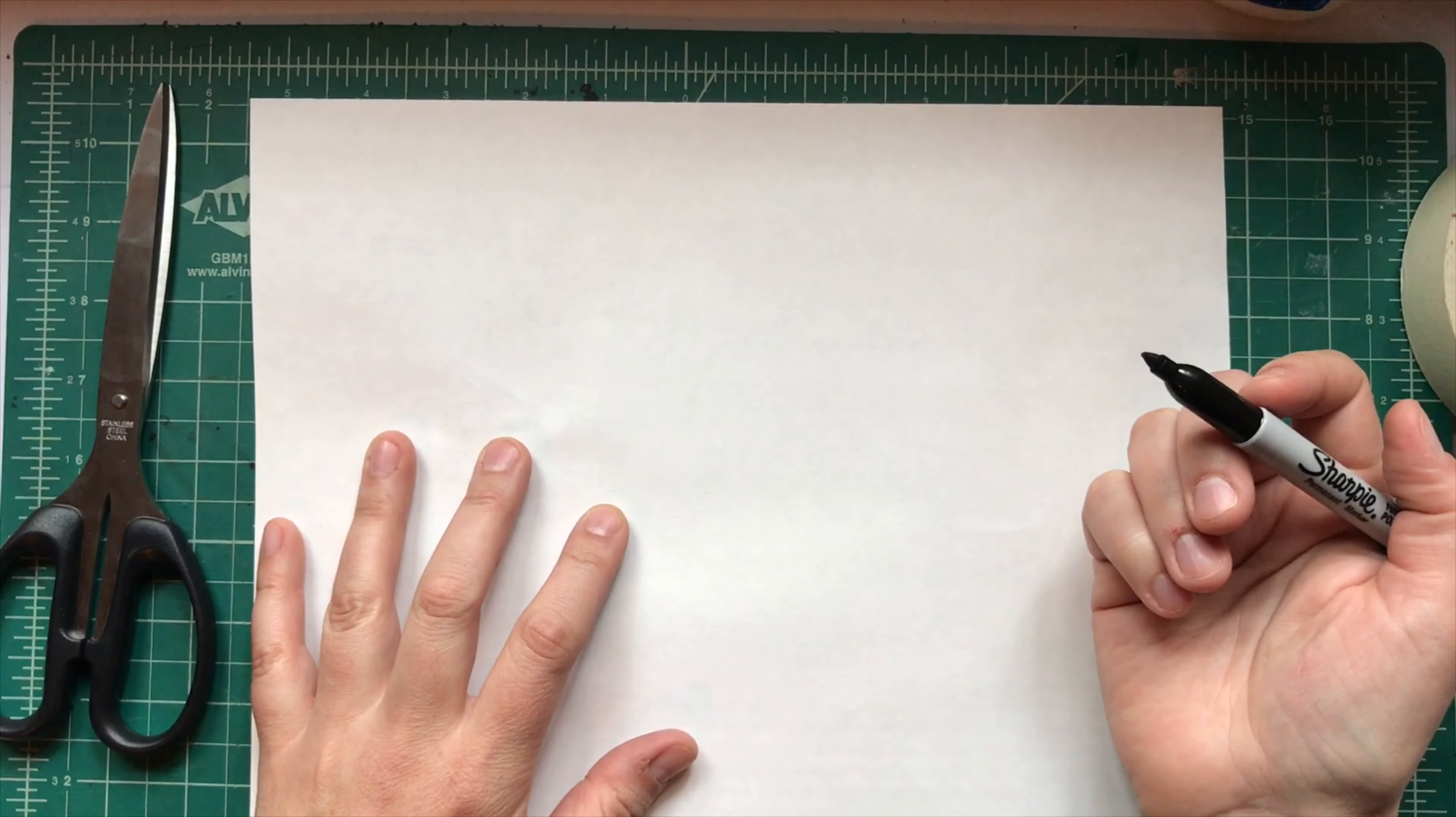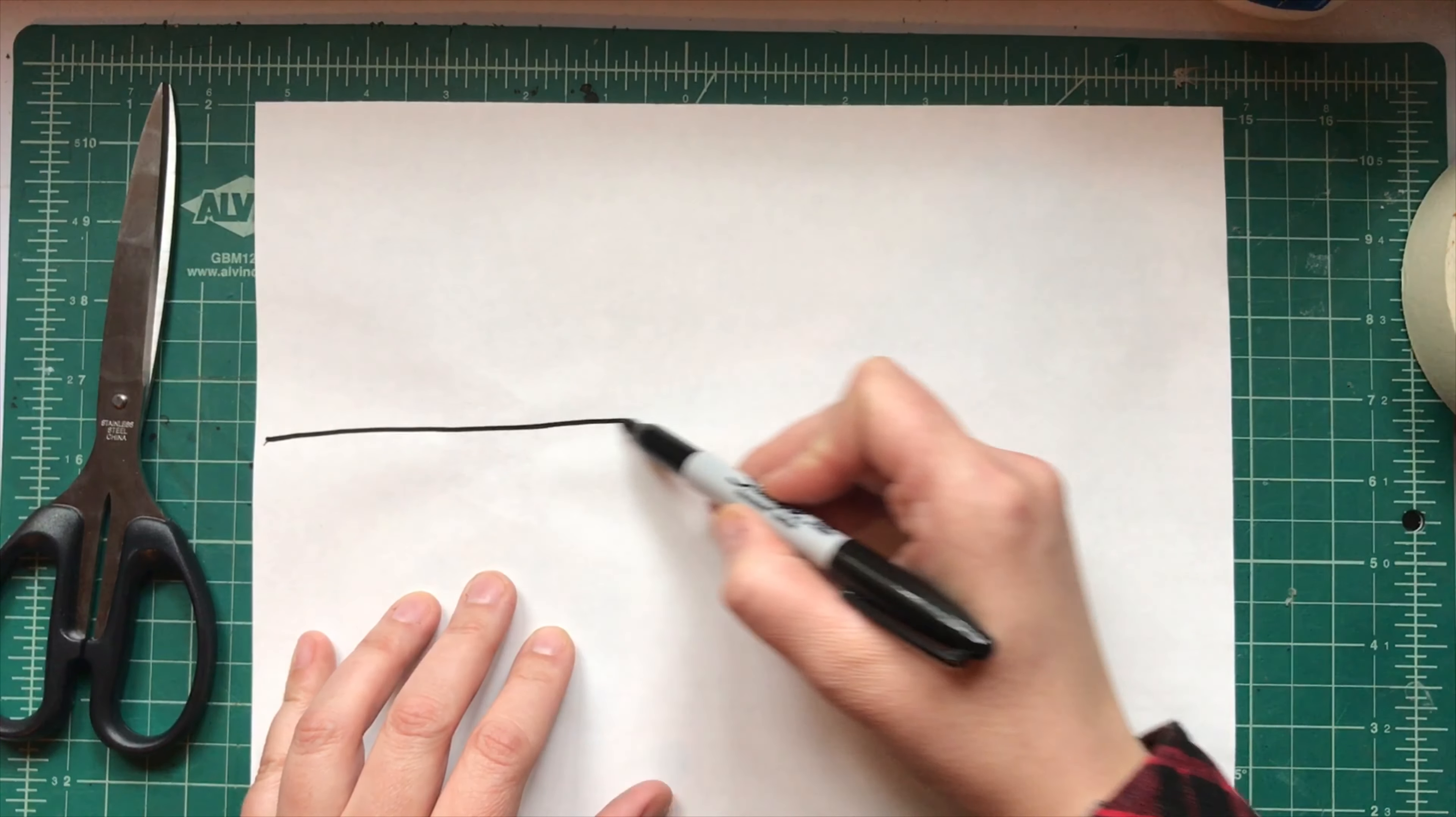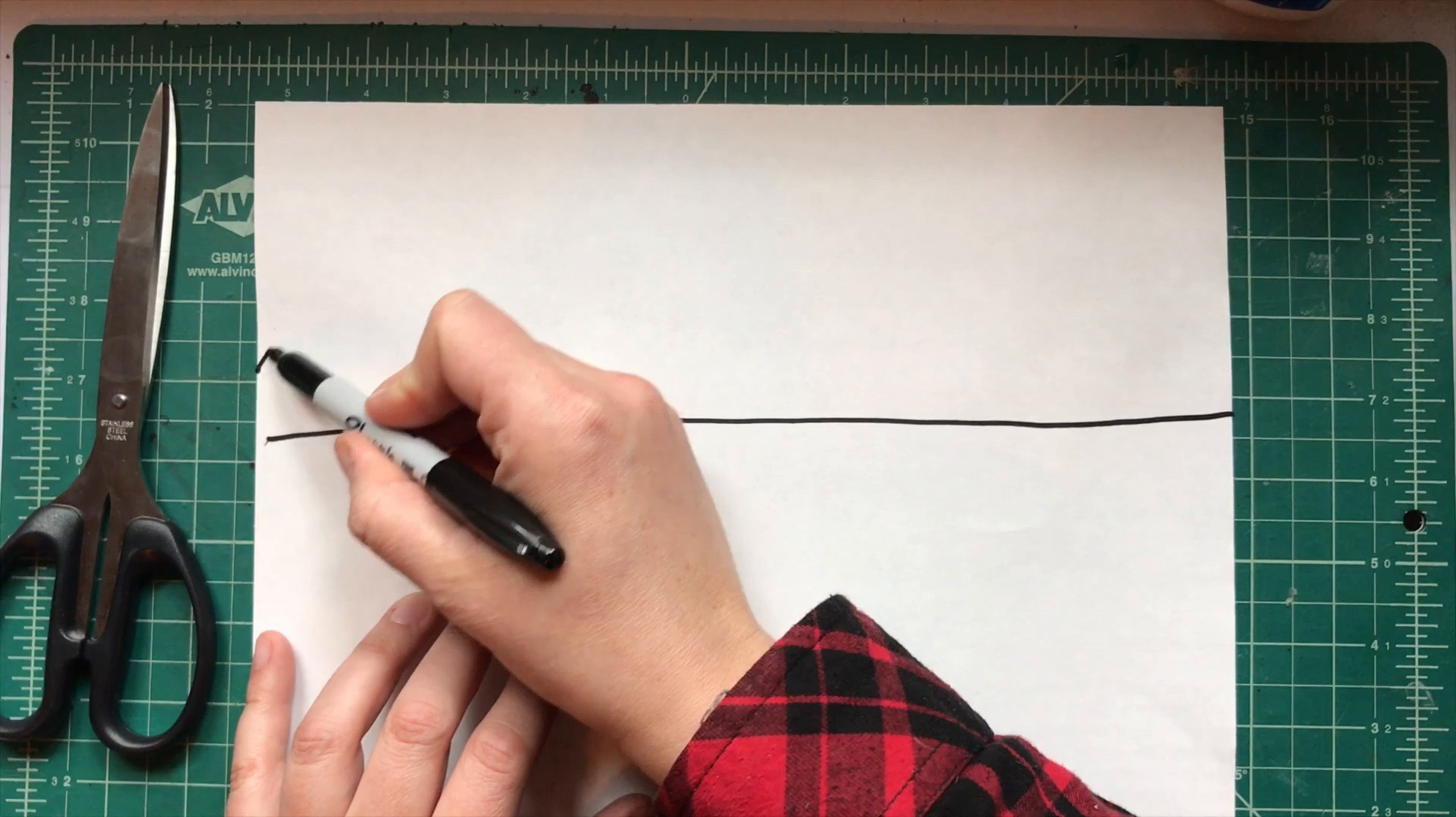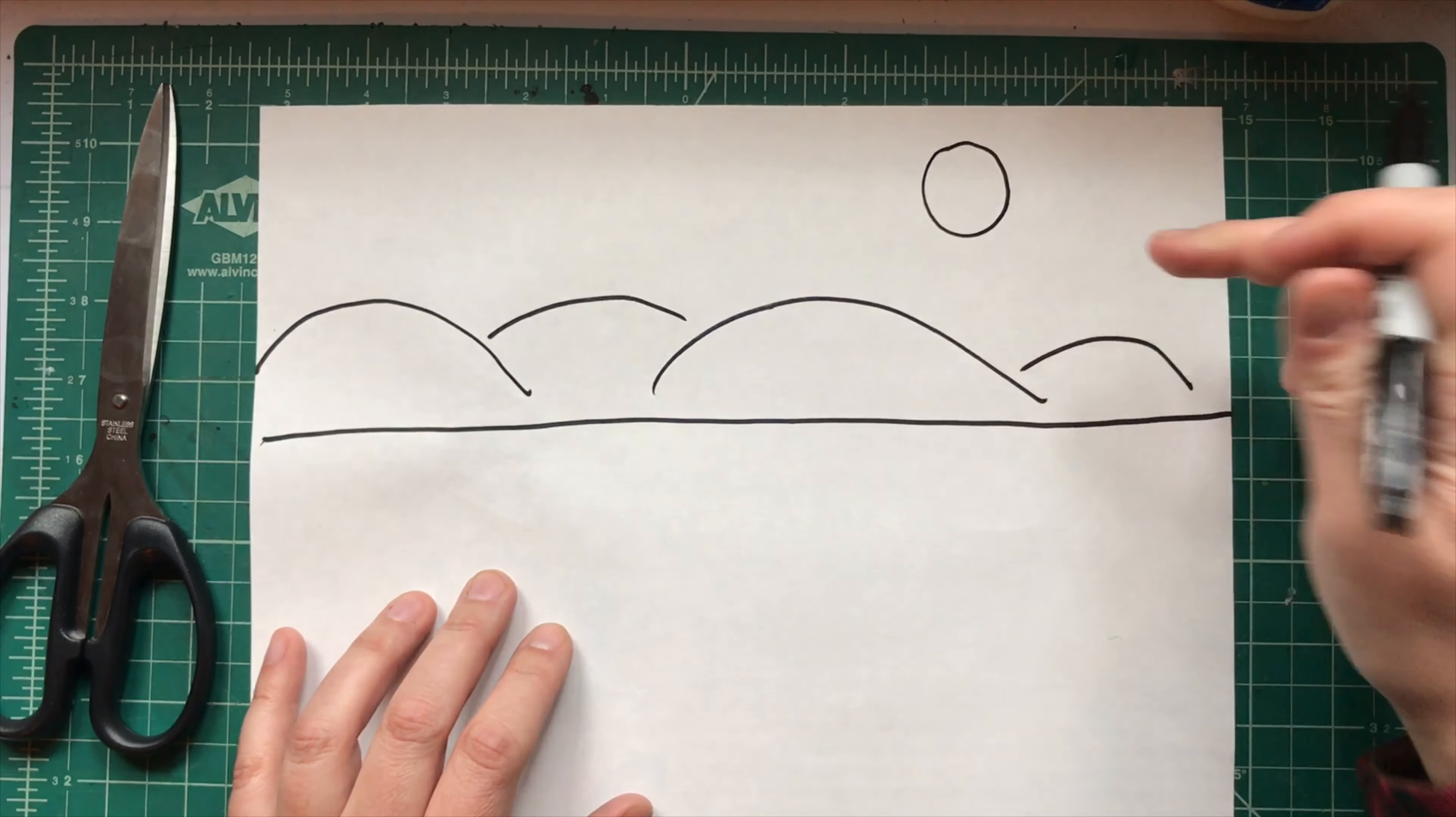So what I'm going to do today is I'm going to use Sharpie so you can see better, but I'm going to draw out my design. This can get as complex as you want. I'm just going to go with a basic one to show you today. So I'm going to draw out my design and have some hills in the background here and have a sun sky.